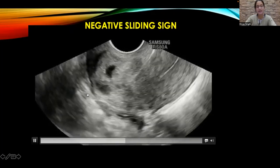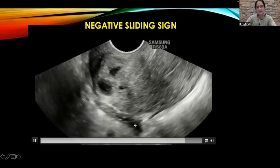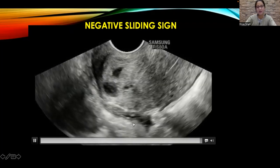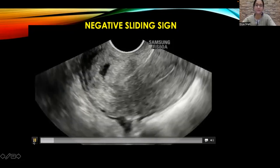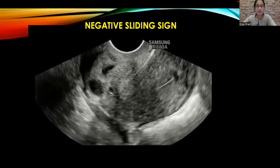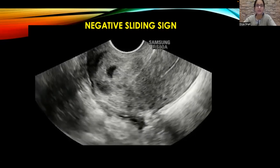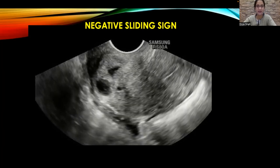There is no sliding of bowel loops on the posterior aspect of the cervix. If something caught your eye, have a look at this hypoechoic irregular patch seen in the region of the torus uterinus. This is again a patch of deep infiltrating endometriosis. But the first clue before you start looking for deep infiltrating endometriosis would be a negative sliding sign here.